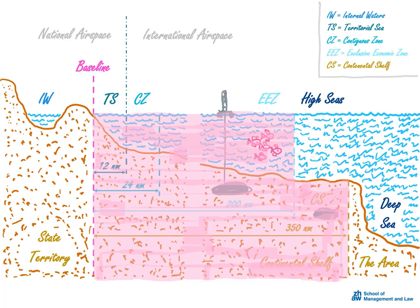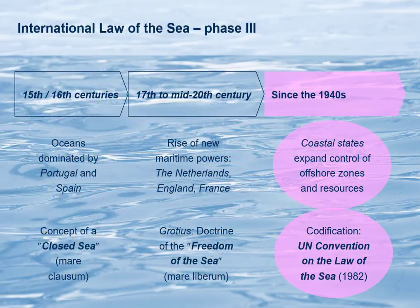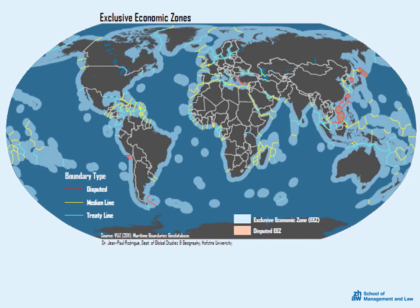By giving coastal states such extensive rights in broad maritime zones along their coasts, the UN Convention on the Law of the Sea has put in place the legal framework for the creation and acquisition of large amounts of high-value maritime real estate. The aggressive claims to offshore zones and resources that many states have made since the middle of the 20th century have been sanctioned in the 1982 UN Convention to a very large extent, most importantly by the recognition of a generous 200-mile exclusive economic zone. The result is visible on the map — the exclusive economic zones claimed by coastal states around the globe add up to quite a large proportion of the oceans. Even tiny islands in the middle of the oceans are capable of creating large EEZs all around them.